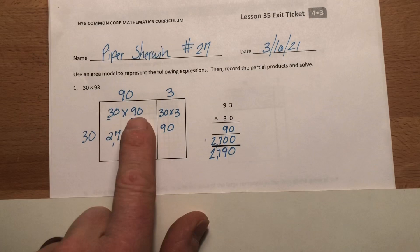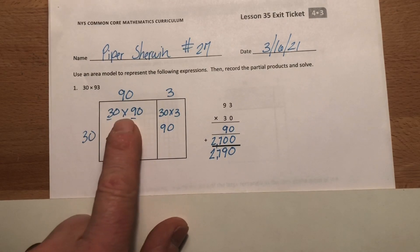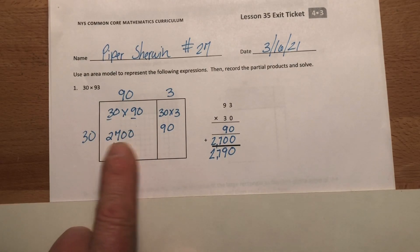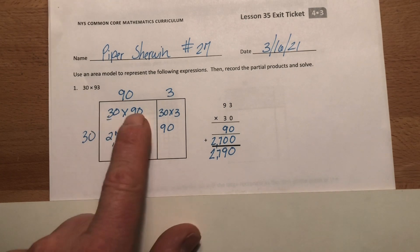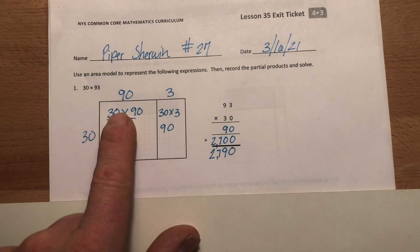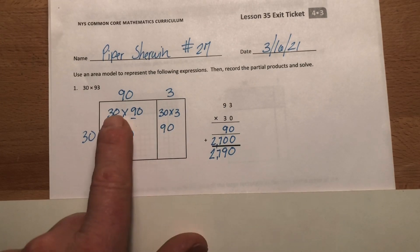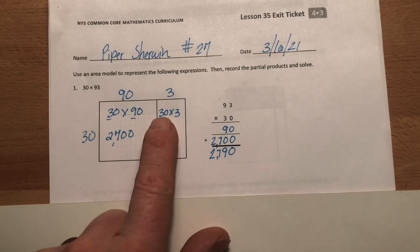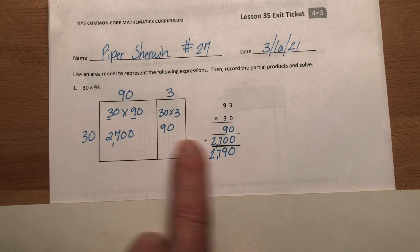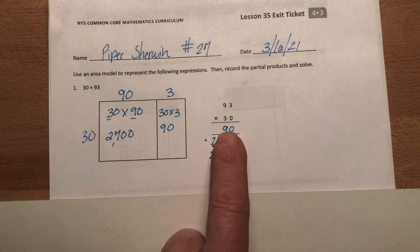Then, of course, we do 30 times 90, which is really 3 tens times 9 tens, and that equals 27 hundreds, okay? Because 3 times 9 is 27. 10 times 10, right? Those tens make a hundred. All right, just bring those zeros down, okay? Over here is 30 times 3. That's 90. And this is the partial product, how it looks.